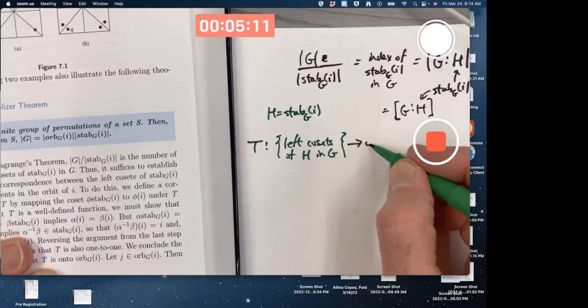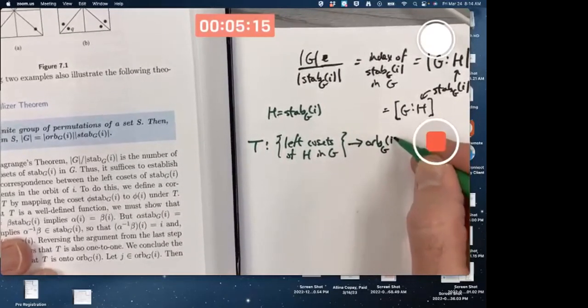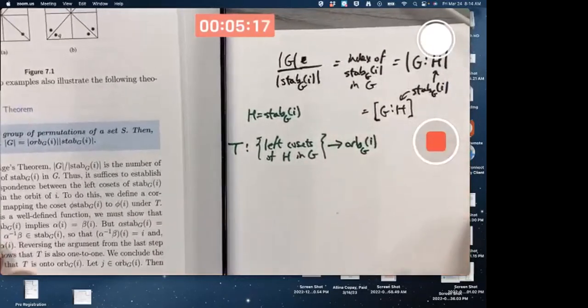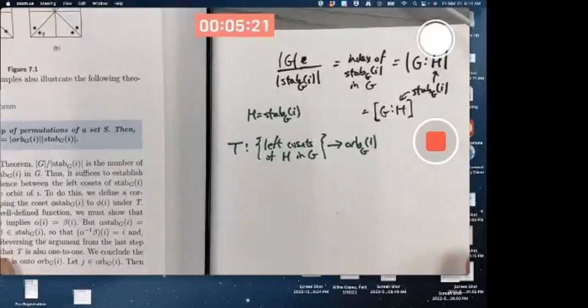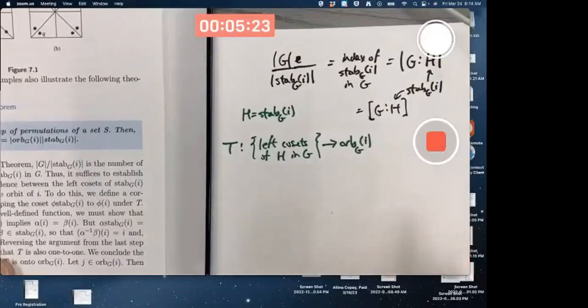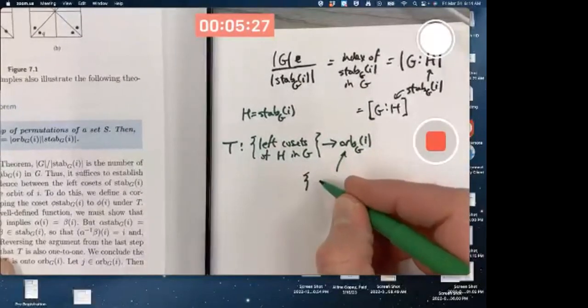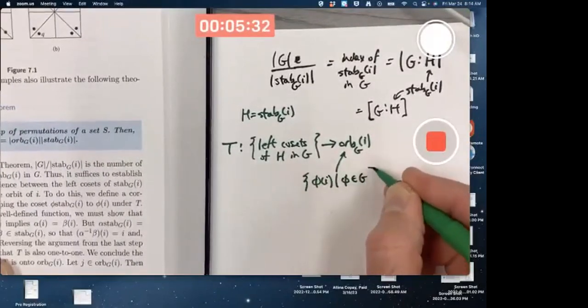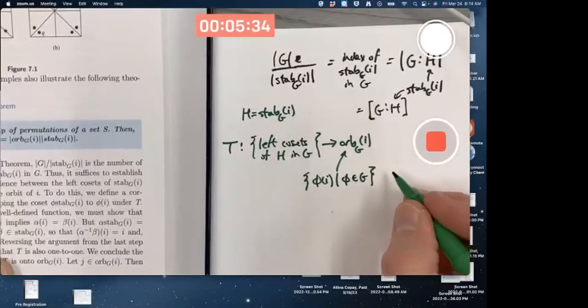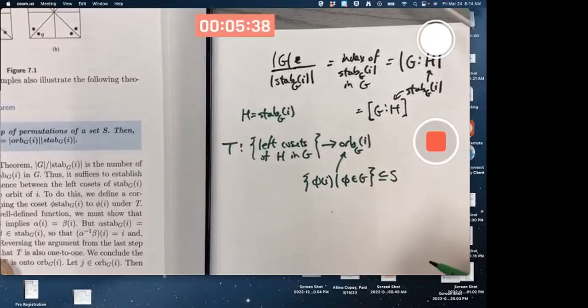To the orbit of the element I, where G, under the group G of permutations. And again, this thing is the set of all outputs phi of I as phi ranges over G. It's a subset of S, the set on which G is acting.